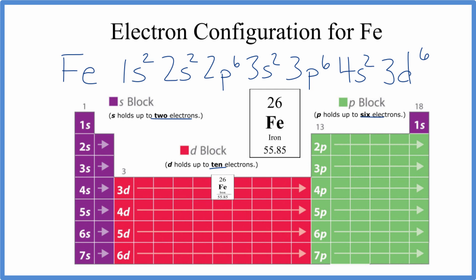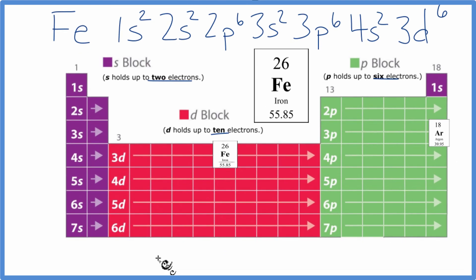If we want to write the condensed notation for this electron configuration, what we do is we find iron, and then we go back to the noble gas that's before it. In this case, it's argon. So we'll take and write Ar for argon, and we'll put brackets around it. And then we write what comes after it. So we have argon, and we have 4s, 2, and then 3d, 6.